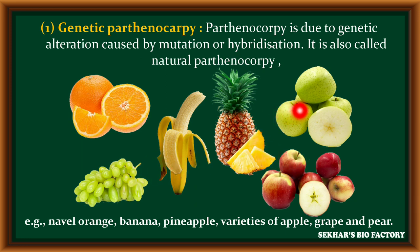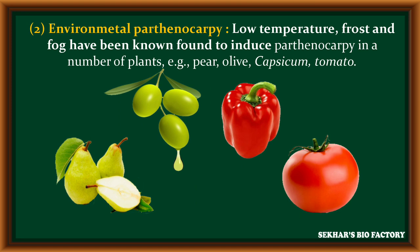The second type is environmental parthenocarpy. Some environmental factors like low temperature, frost, and fog have been found to induce parthenocarpy in some plants like pear, capsicum, and tomato. Such type of parthenocarpy production is called environmental parthenocarpy.